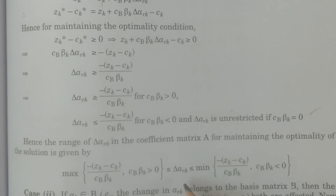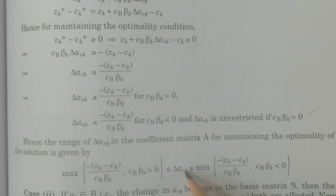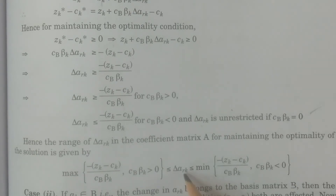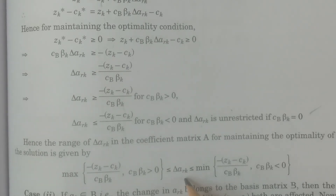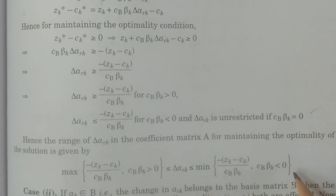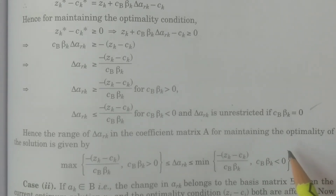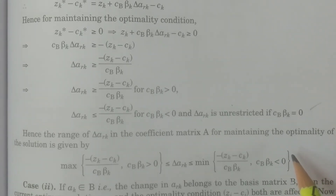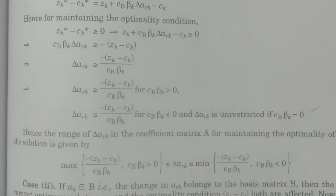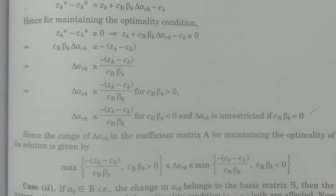Whenever a change takes place in one element of the coefficient matrix, say ark, to maintain the optimality condition, this is the range for delta-ark. This completes Case 1. Case 2 — when ak belongs to the basis matrix B — will be discussed in the next class. We have discussed Case 1: ak does not belong to B. Hope you understand. Thank you very much.